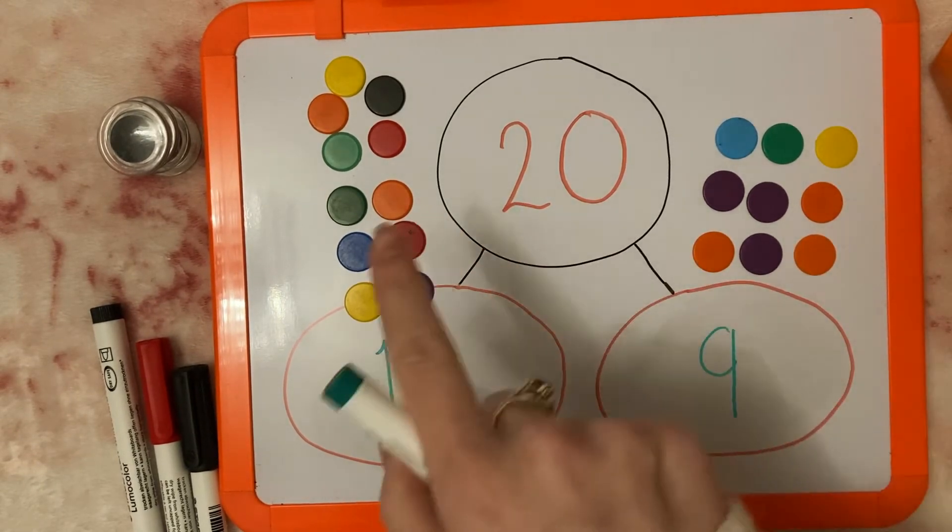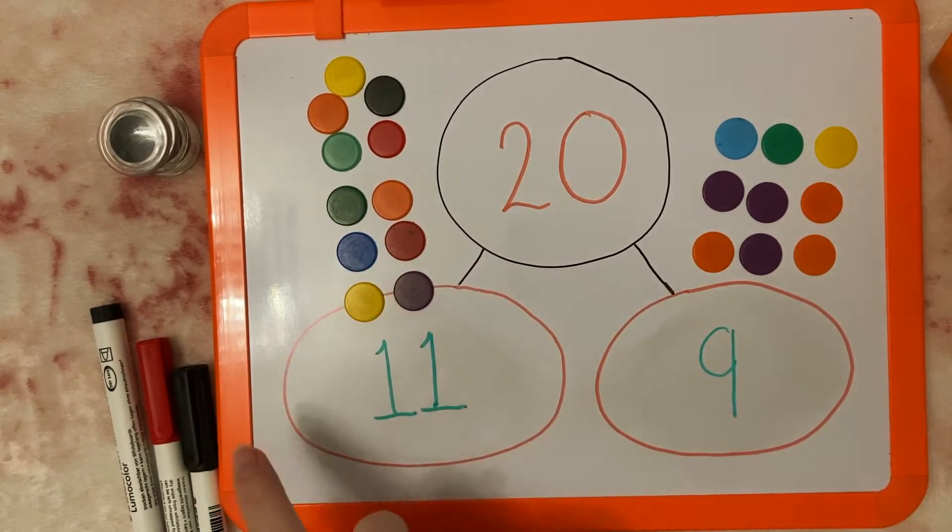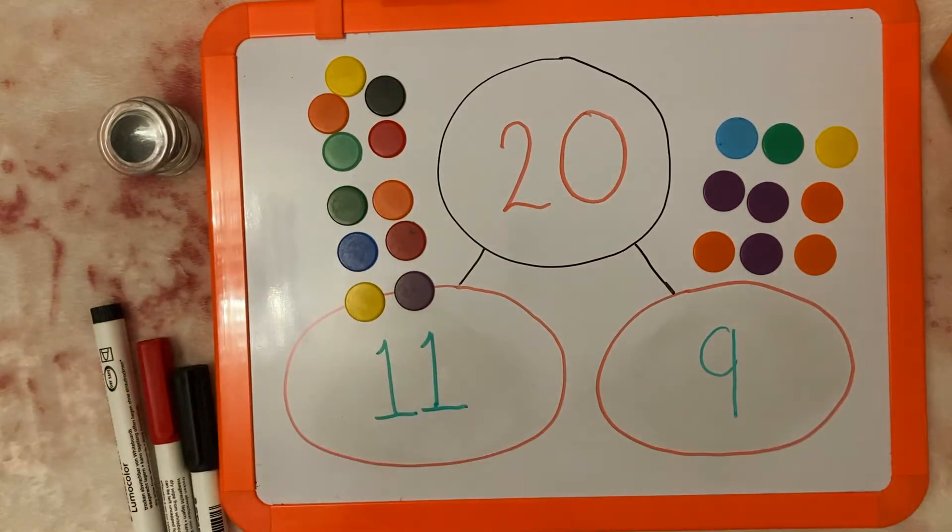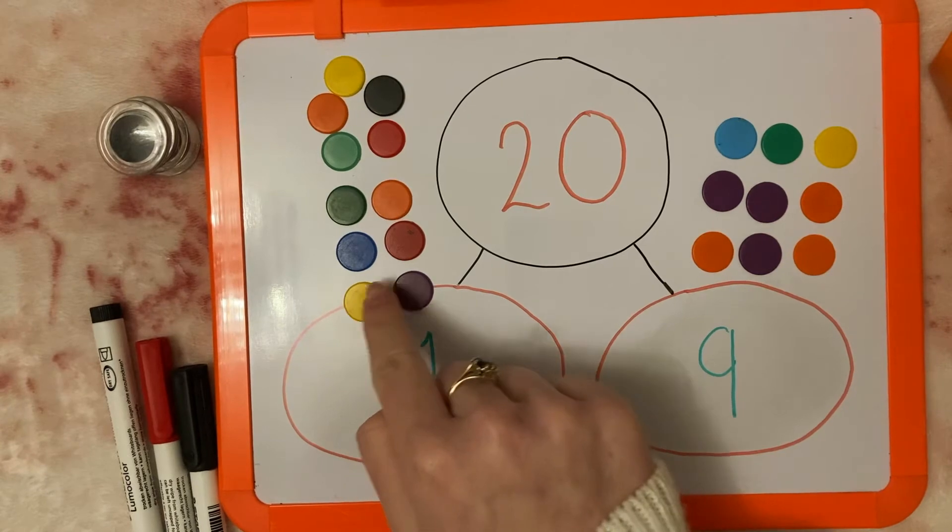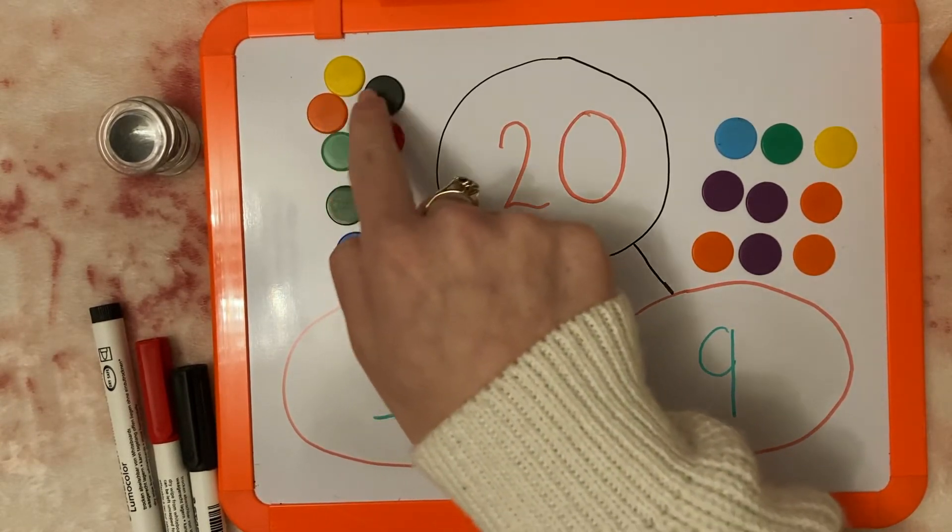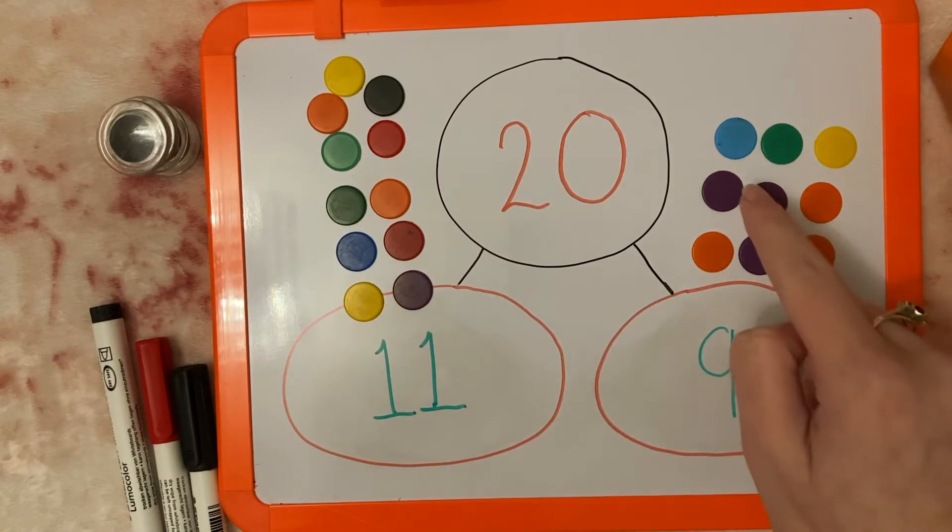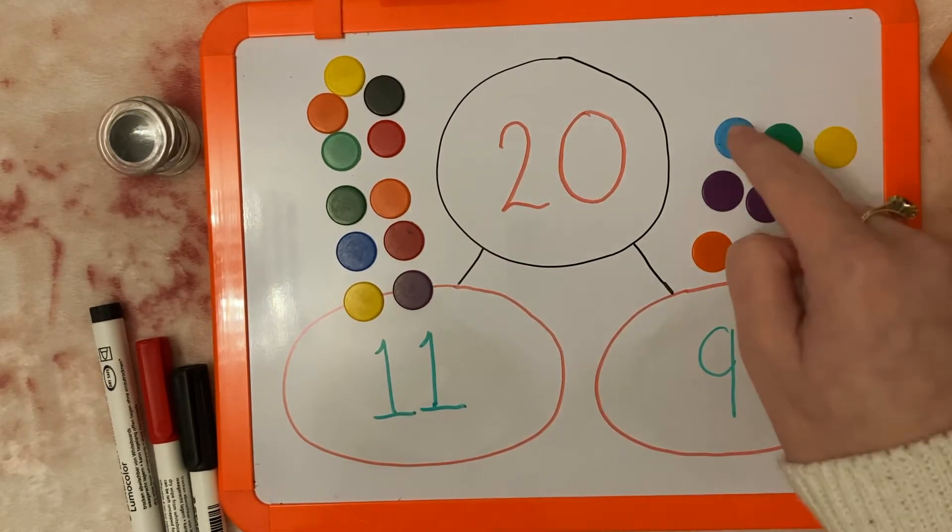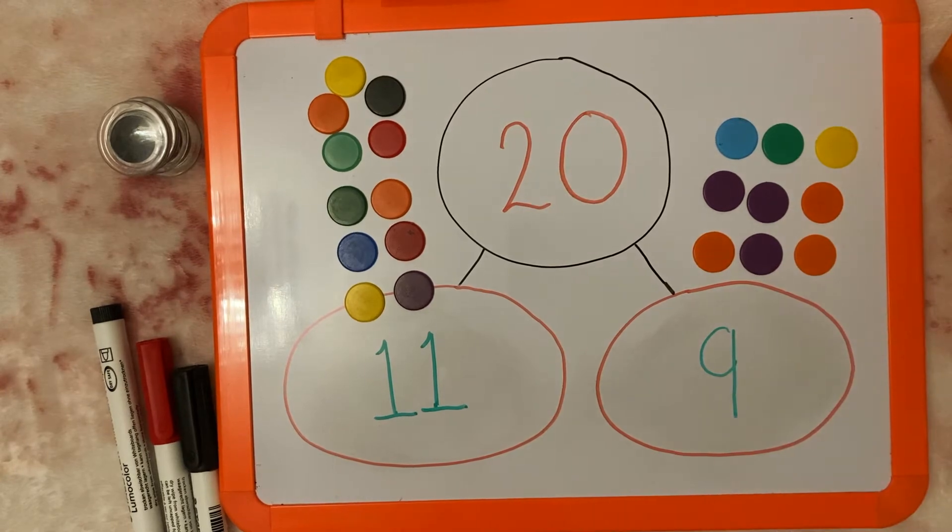Just to check we've got them, I'm going to count from 1 up to 20 using all of these counters, and we'll check if we've got the correct pair. 1, 2, 3, 4, 5, 6, 7, 8, 9, 10, 11, 12, 13, 14, 15, 16, 17, 18, 19, 20. Brilliant.